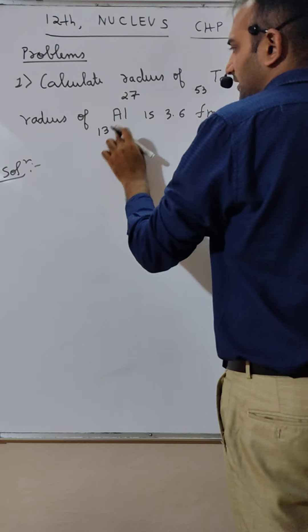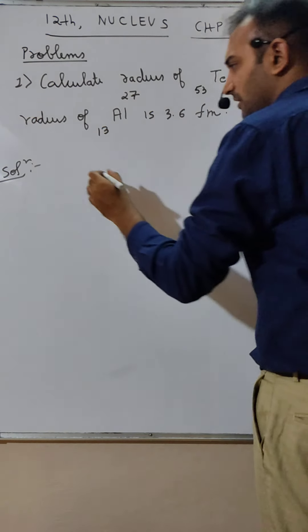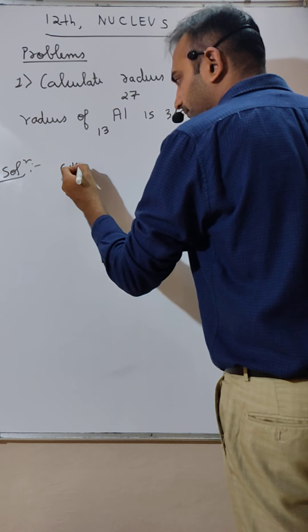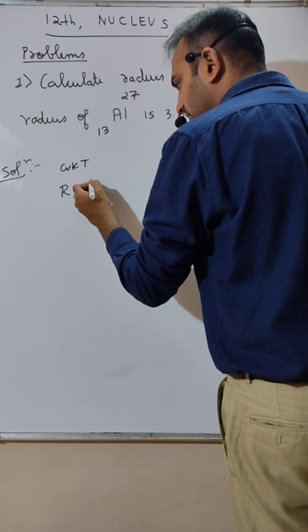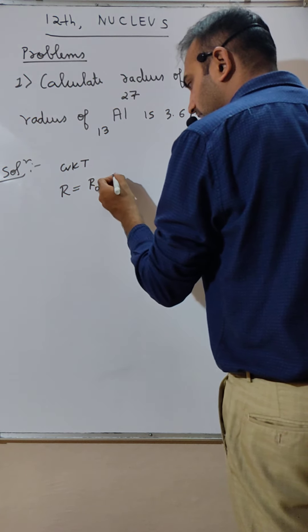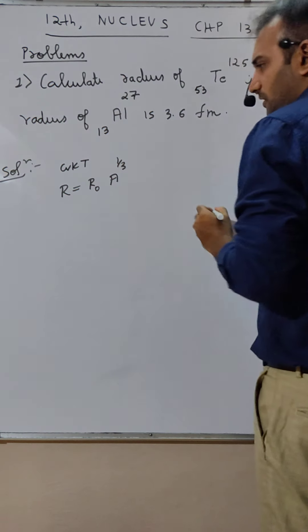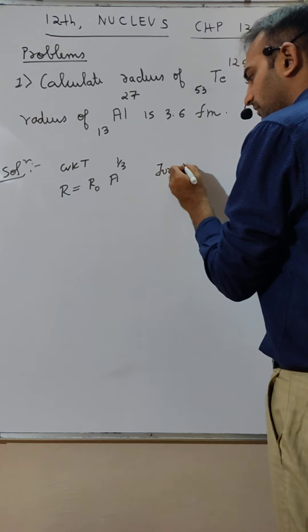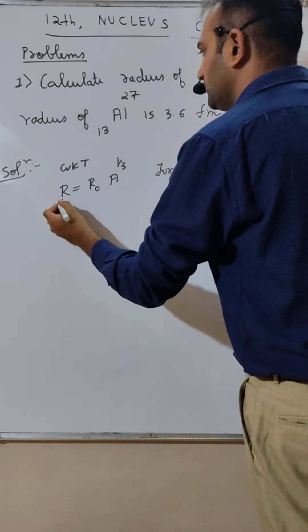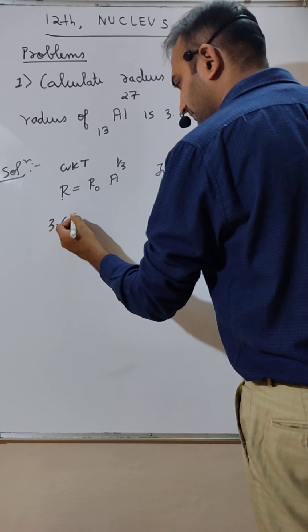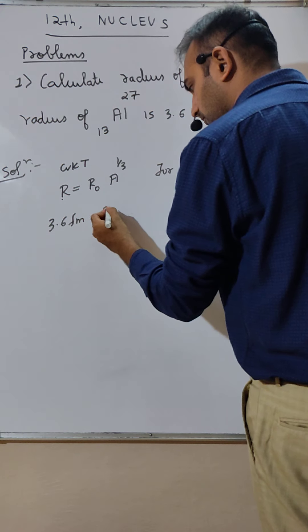If radius of aluminum is 3.6 fm, see we know that radius is given by R = R₀A^(1/3). So for aluminum, the radius 3.6 fm is equal to R₀ times...